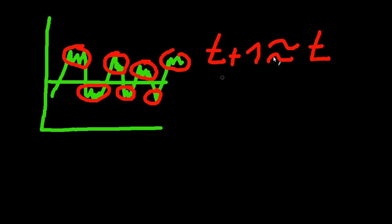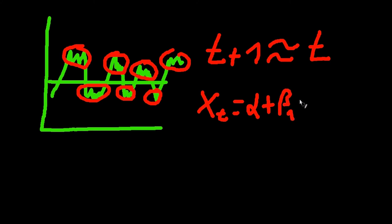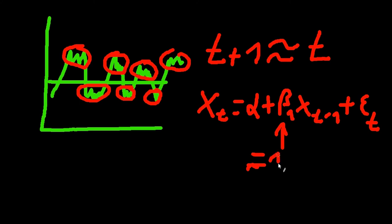It's kind of like if you do a regression and you say x at time t is equal to alpha plus beta_1 times x_{t-1} plus an error term, with the restriction that this coefficient is equal to one. This would mean that our time series is extremely persistent. And if that is the case, then you have what we call a unit root.